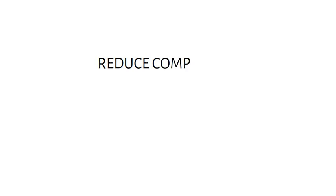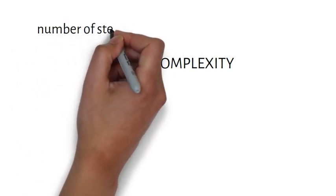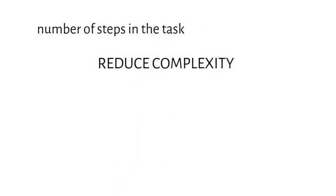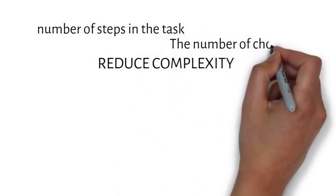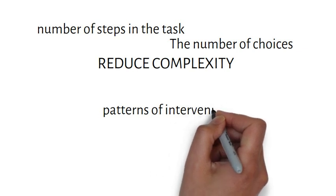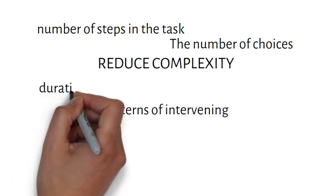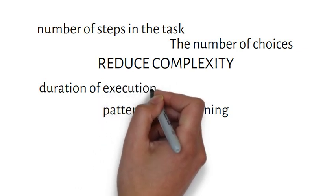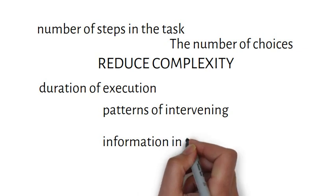Now we move on to the second part of the video where we will talk about specific strategies to reduce medication errors. Let's talk about reducing complexity. Researchers have developed an operational definition of complexity in patient care. We can assess complexity by measuring the number of steps in the task, the number of choices, execution duration, the amount of information contained for doing the task, and patterns of intervening and distracting tasks. Simplification of the task will lead to fewer errors.